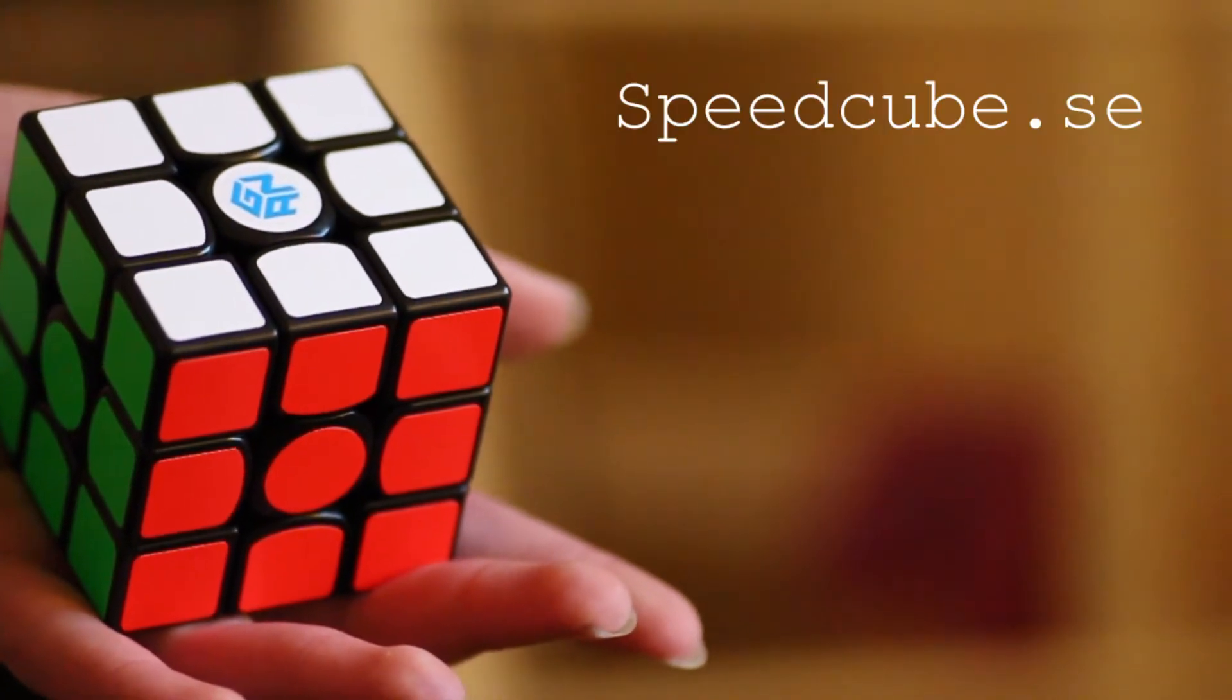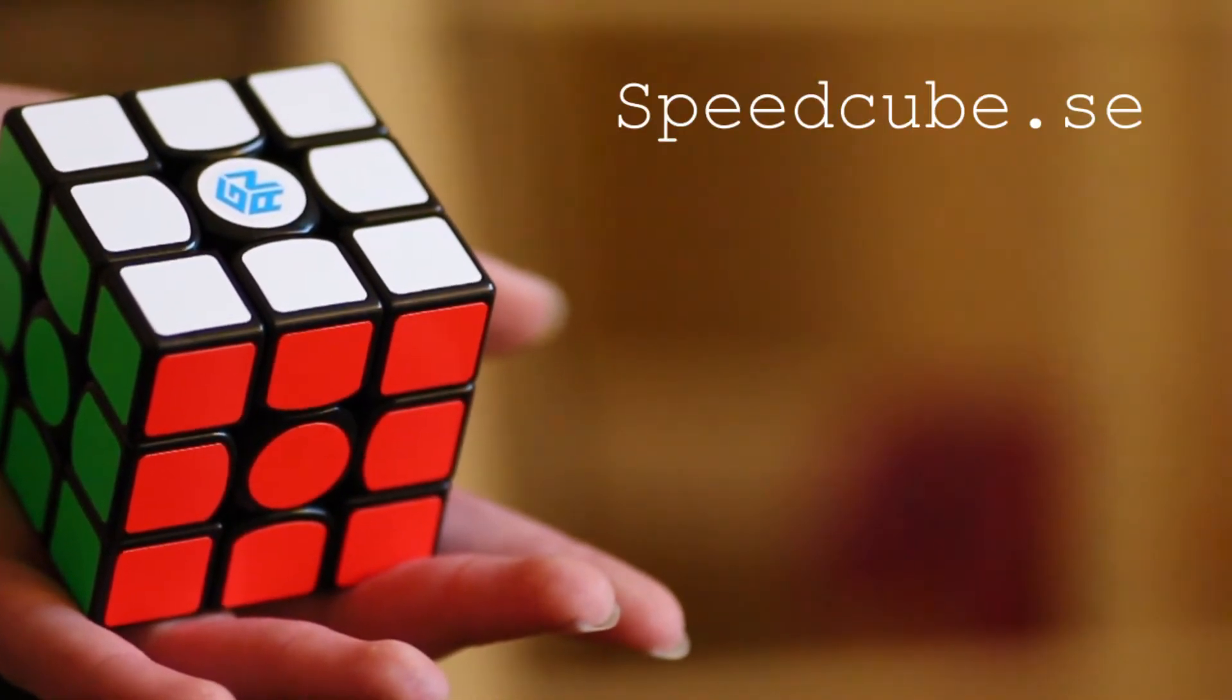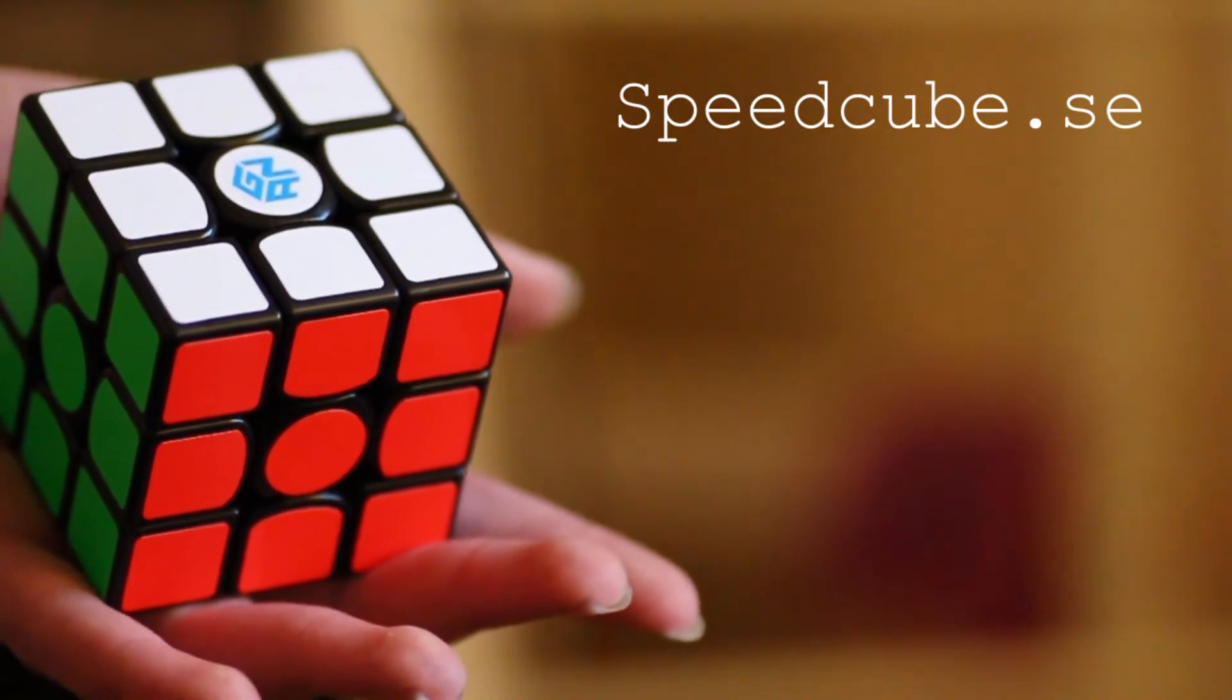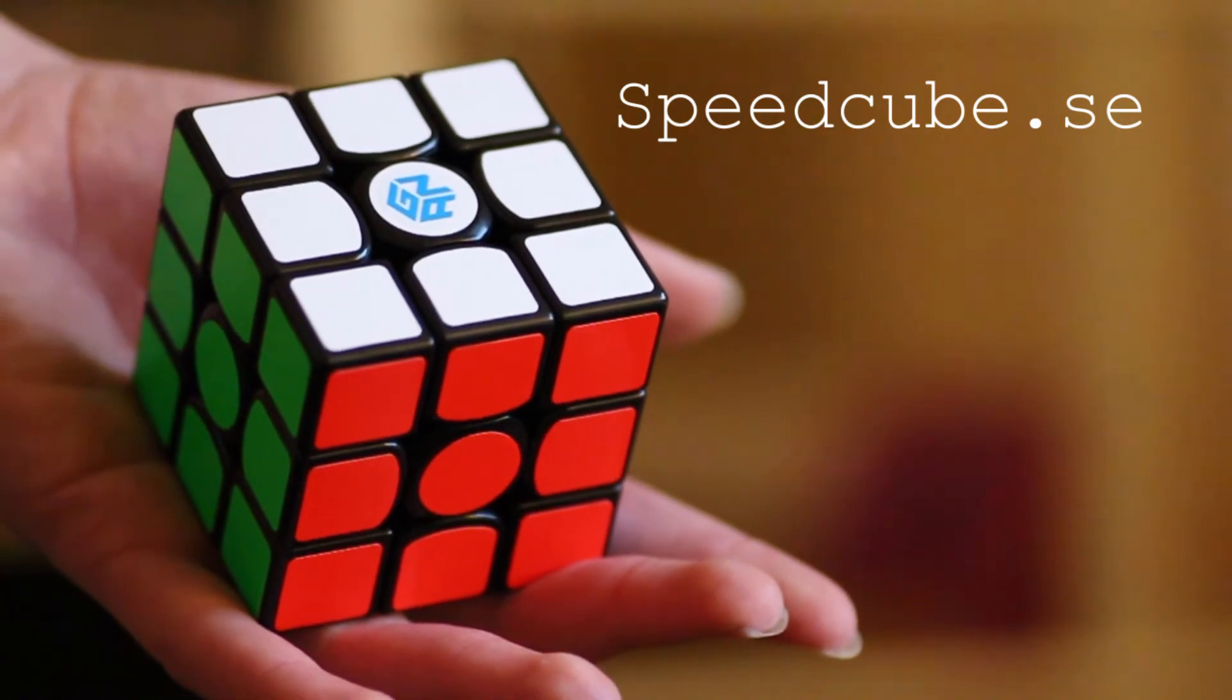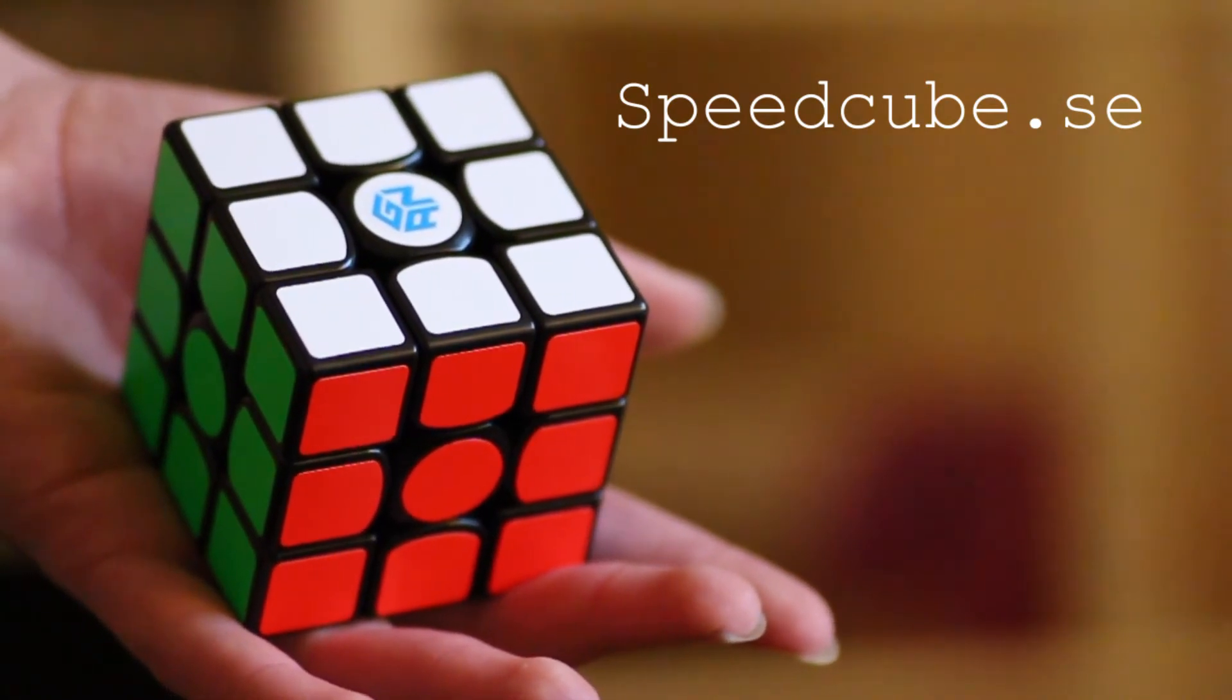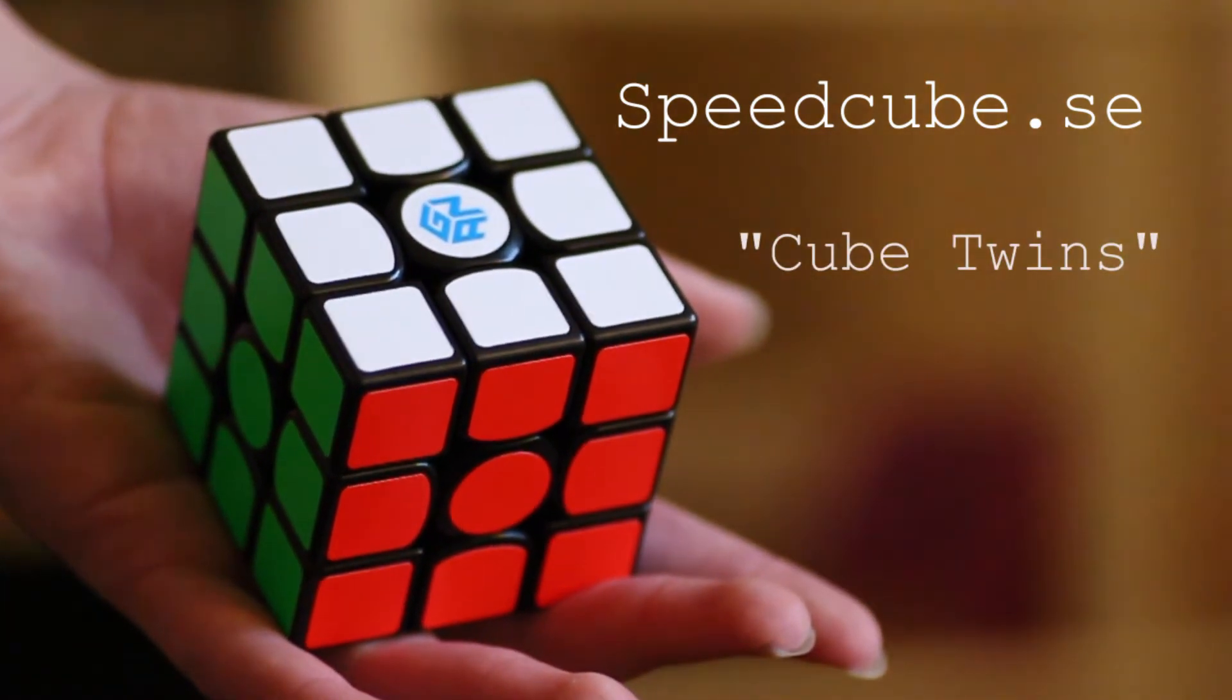Jag vill också ge ett stort tack till Speedcube.se som skickar den här exklusiva 303 till oss. Och om ni själva känner för att köpa den här kuben så finns det på Speedcube.se och det finns en länk nere i beskrivningen. Glöm inte att använda rabattkoden CUBETWINS för att få 5% rabatt på er order.